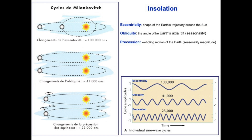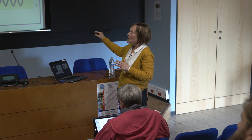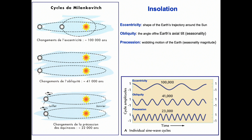Why is insolation changing through time? Because insolation is the result of three orbital parameters. The first is eccentricity — the shape of the Earth's trajectory around the Sun — with a main cyclicity of 100,000 years. When eccentricity is high, in general we are in a glacial period. The second parameter is obliquity, the angle of the Earth's axial tilt that determines seasonality. This angle varies between roughly 22 and 25 degrees. When the angle is high, the poles are closer to the Sun, and in general this determines interglacial periods; the reverse tends to trigger glacial periods.